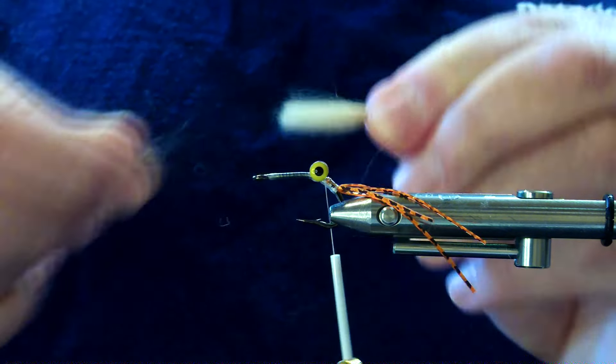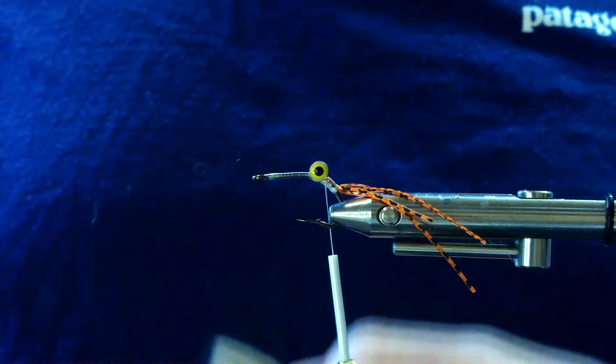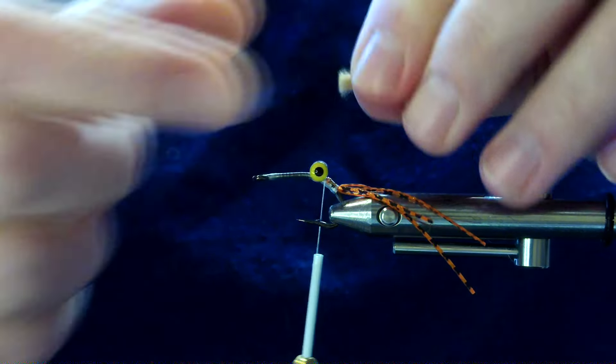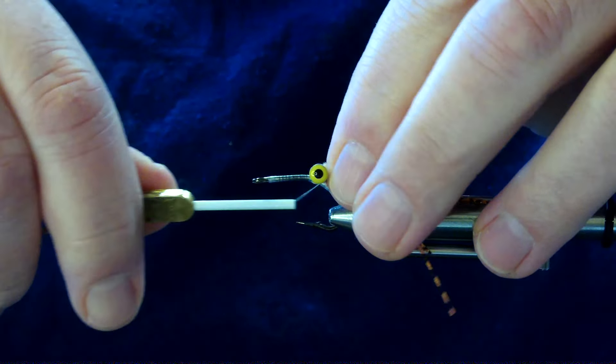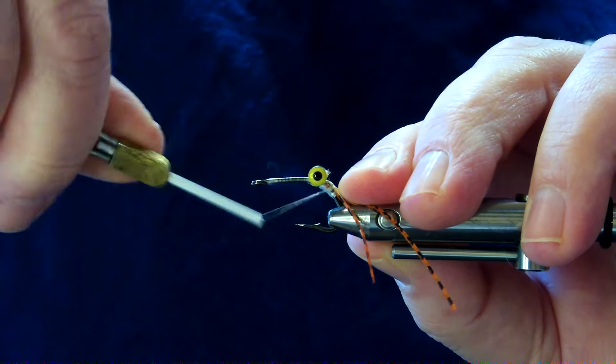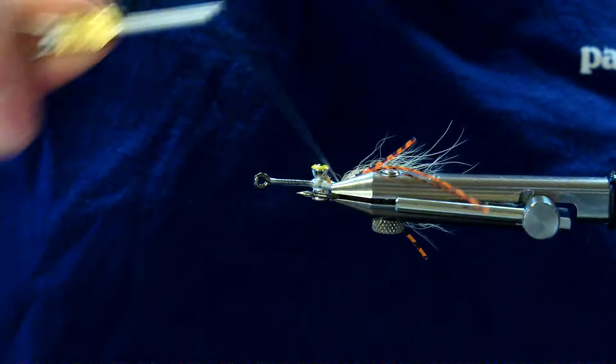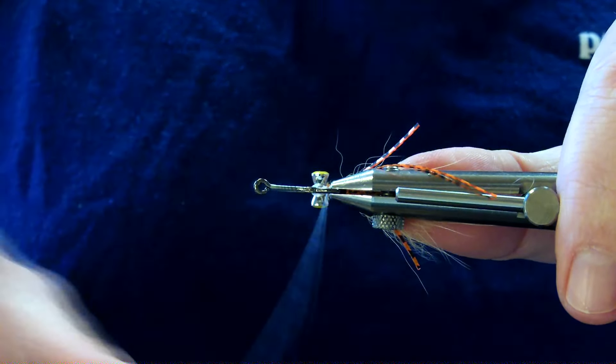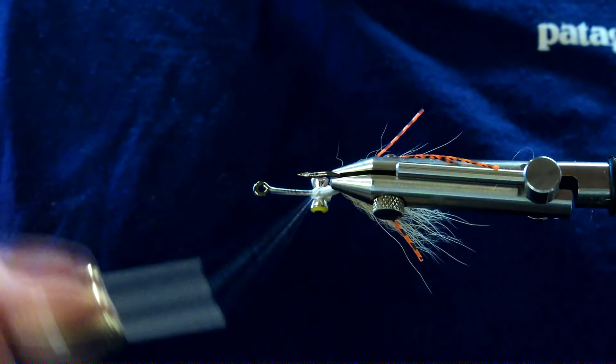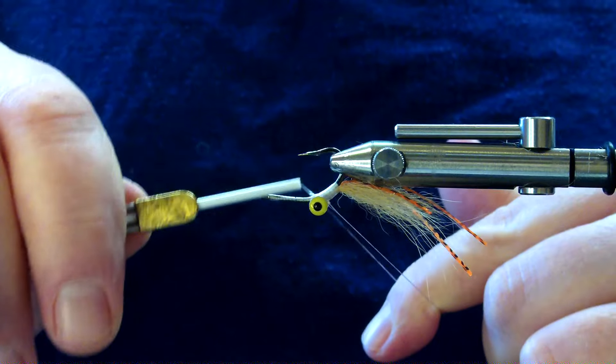So this is tan Arctic Fox. It's actually quite a dark tan, wouldn't be your standard light tan. I dyed this myself so I wanted it slightly darker. Now we got a short little pinch, it's only a little bit longer than the whole length of the hook. Just going to cover up those rubber legs.